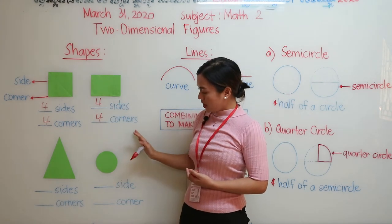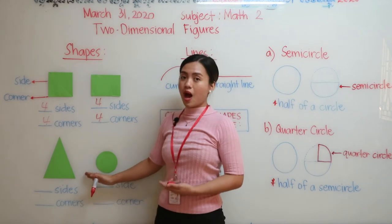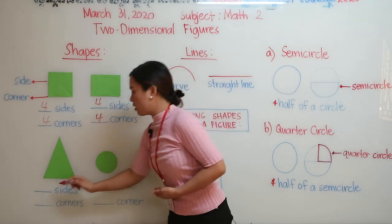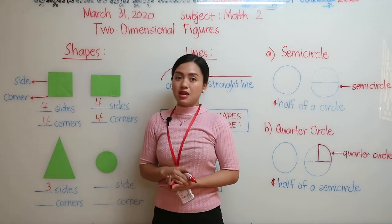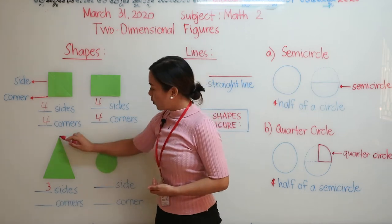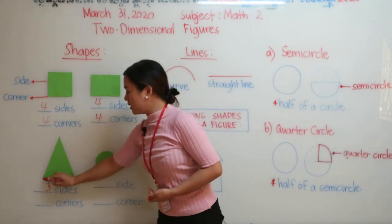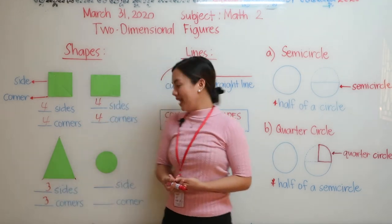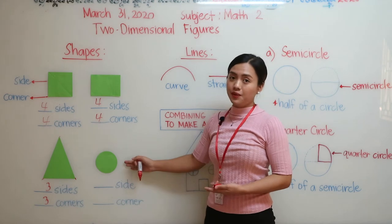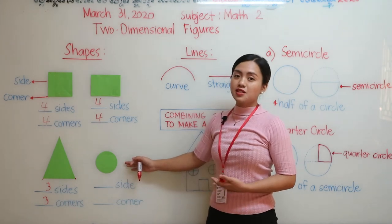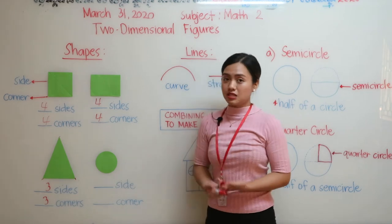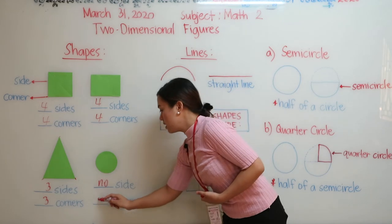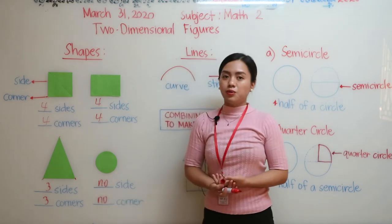Next we have triangle. How many sides? We have one, two, and three — so there are three sides and three corners. And we have circle. Don't forget, students, that a circle doesn't have a side — so there is no side and there is no corner.